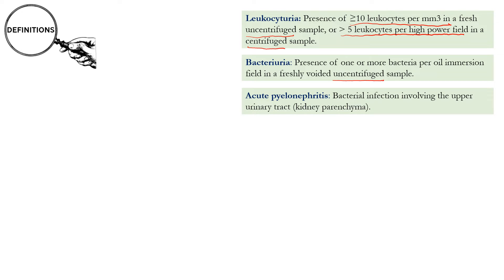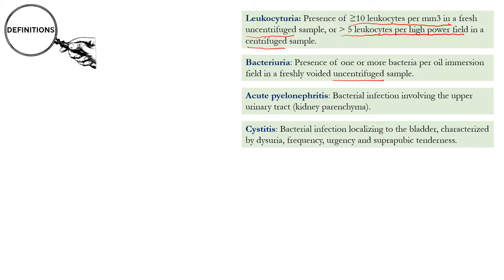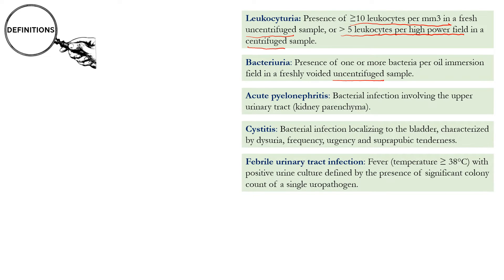Acute pyelonephritis is bacterial infection of the upper urinary tract, i.e. renal parenchyma. Cystitis is bacterial infection of the bladder characterized by dysuria, frequency, urgency and suprapubic tenderness. Febrile UTI is fever, i.e. temperature more than or equal to 38 degrees centigrade, with positive urine culture defined by the presence of significant colony count of a single uropathogen. The cutoffs for significant colony count will be discussed later. Recurrent UTI is two episodes of UTI during any time period during childhood.